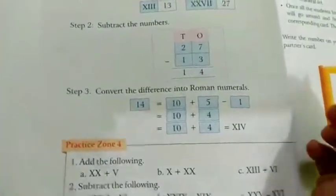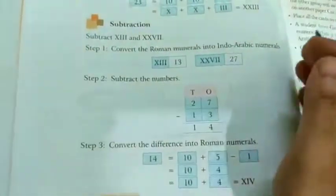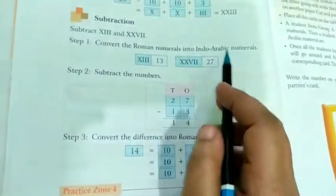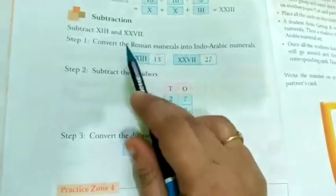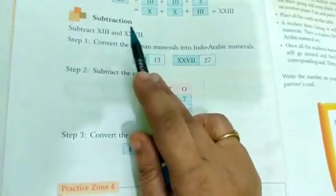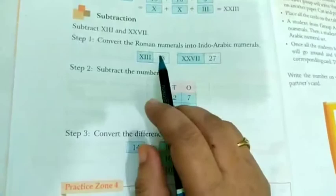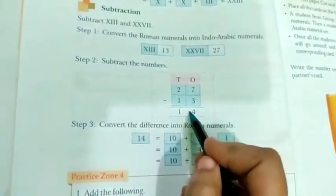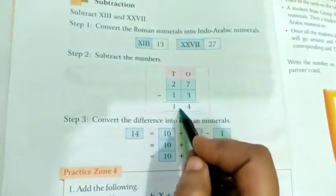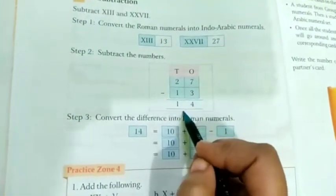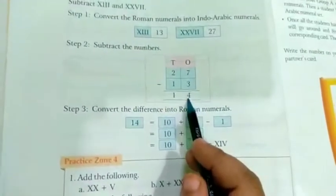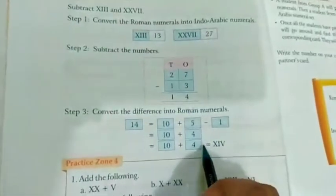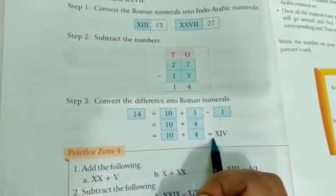Then subtraction is there. Convert the Roman numerals into Indo-Arabic numerals. So 13, here 13 and 27. So first we have to convert it into Indo-Arabic numerals and then we have to subtract as usual. So 27 minus 13 that is 14. After getting the difference, after getting the answer, then again you have to convert it into Roman numerals.